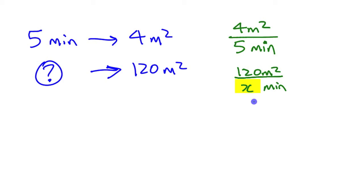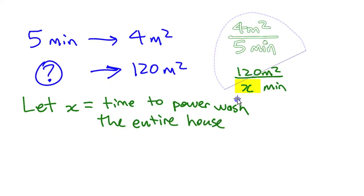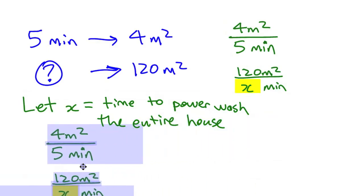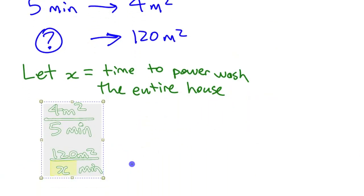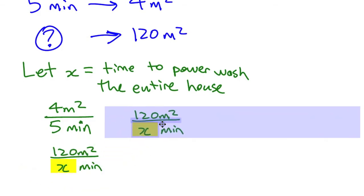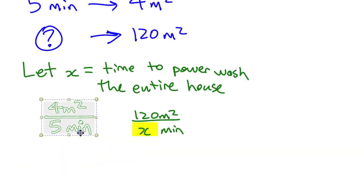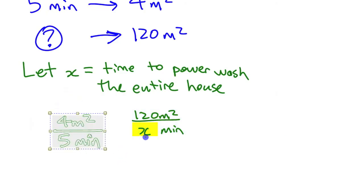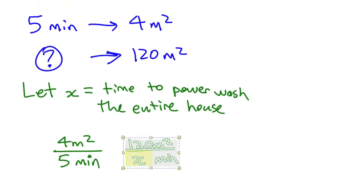Now, if I'm using a variable, I should write what's called a let statement or somehow identify what that variable is going to be. I'm going to say let x equal time to power wash the entire house. And now I'm going to move these things down here. We're going to make a comparison between those two things. A proportion is when you put these side by side and you put an equal sign in between them. So we'll line them up. We put them side by side and we put an equal sign between them.